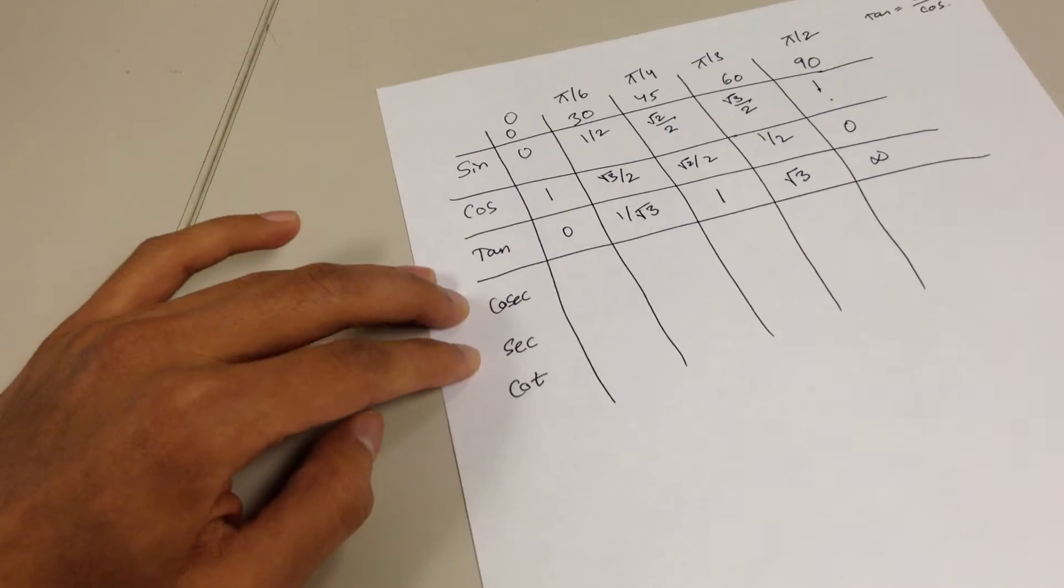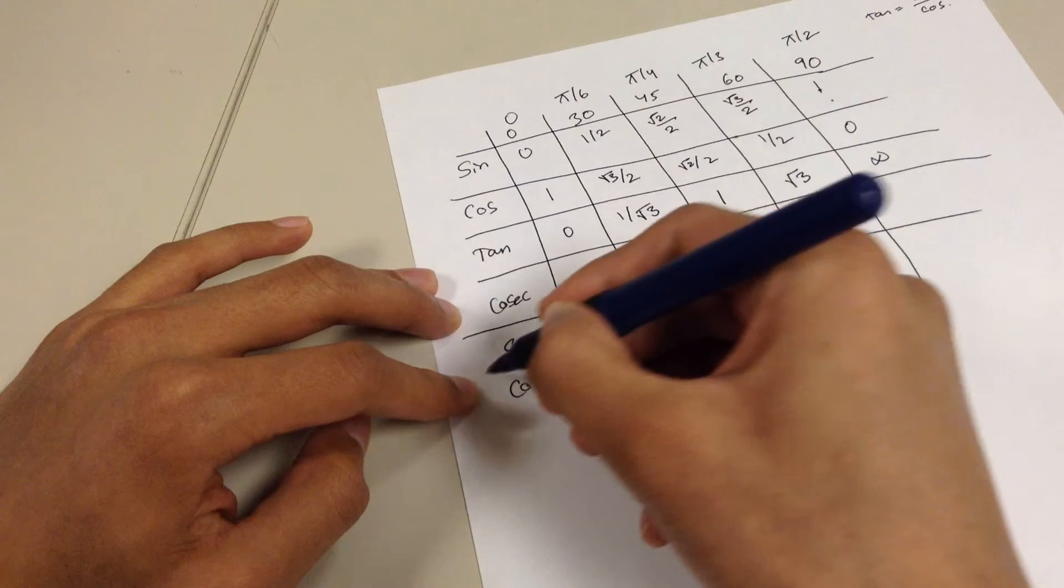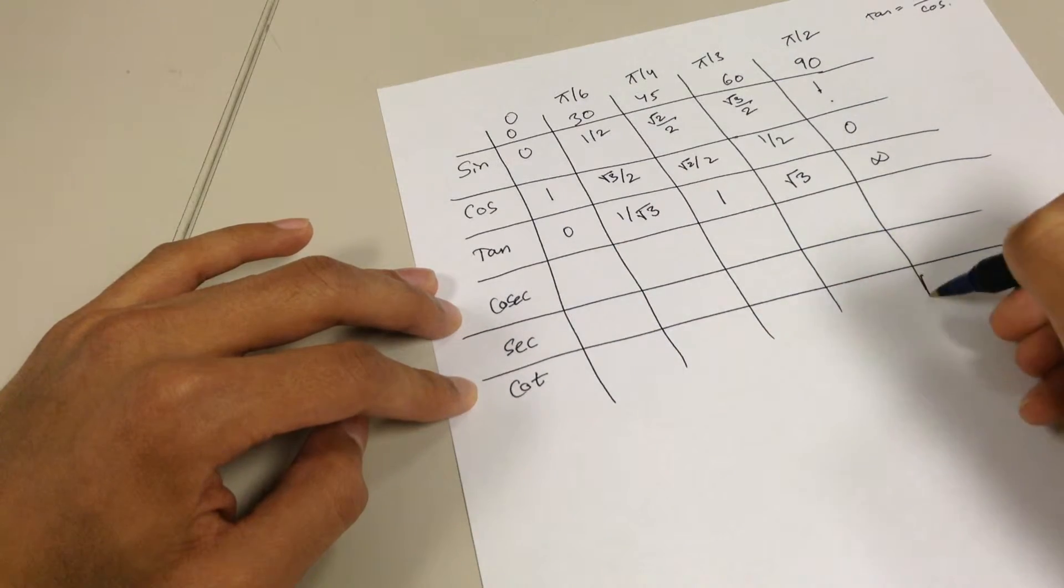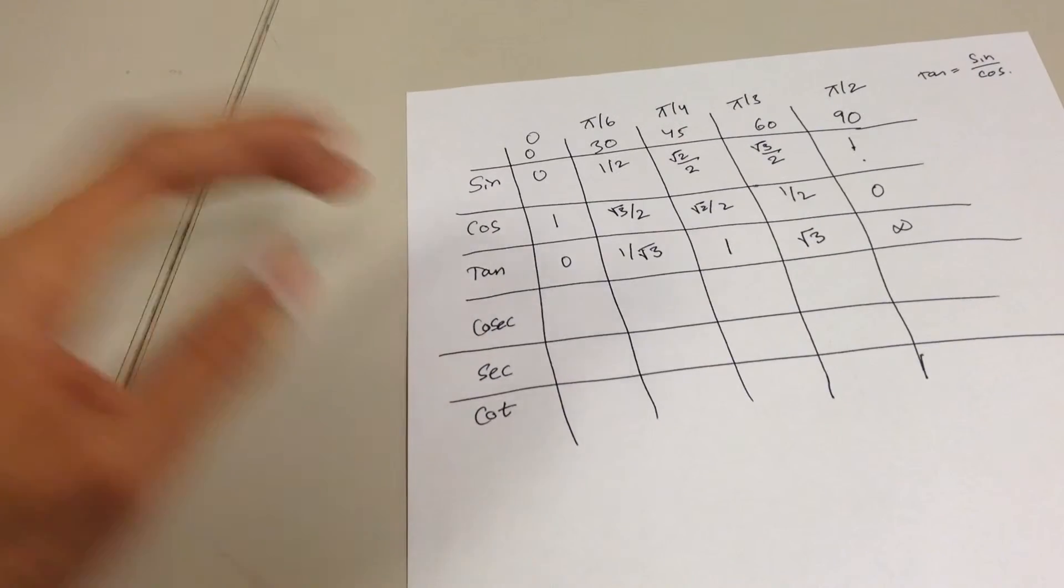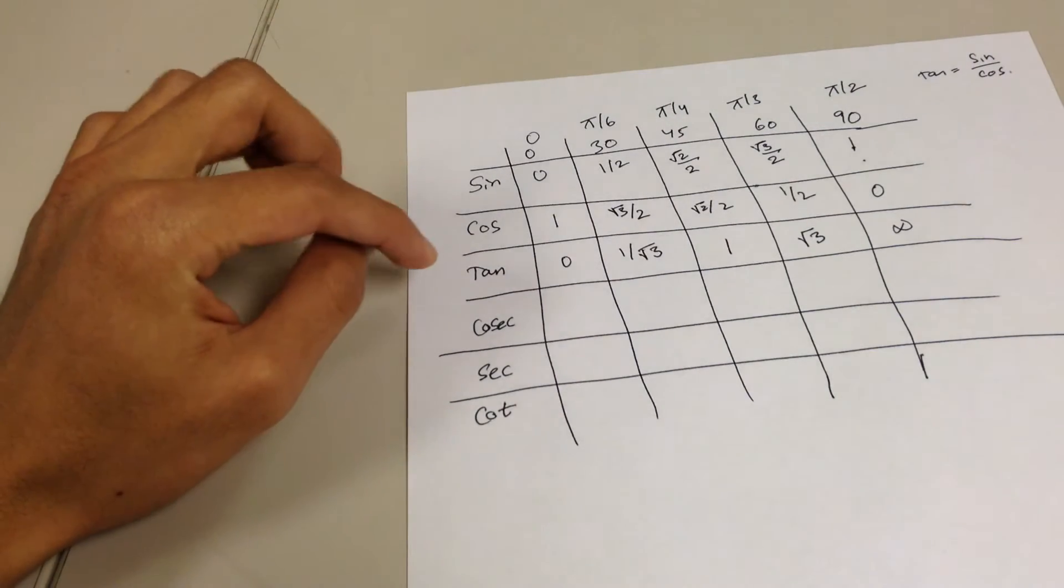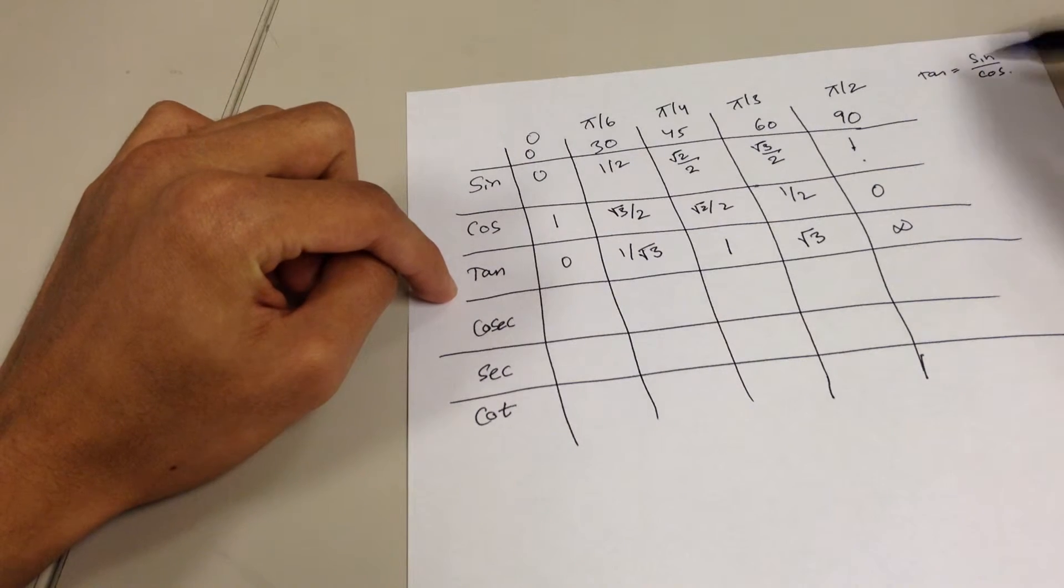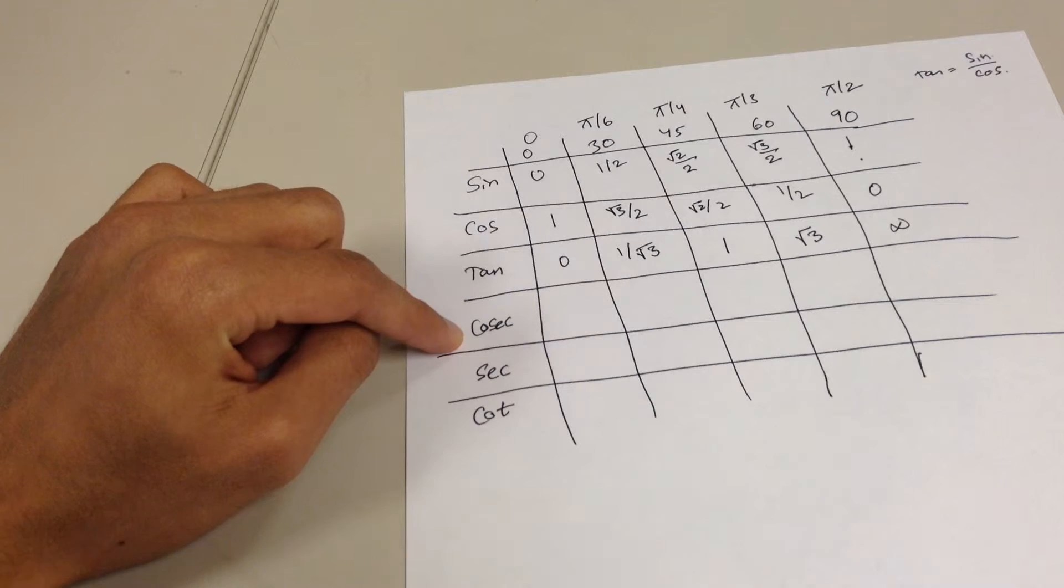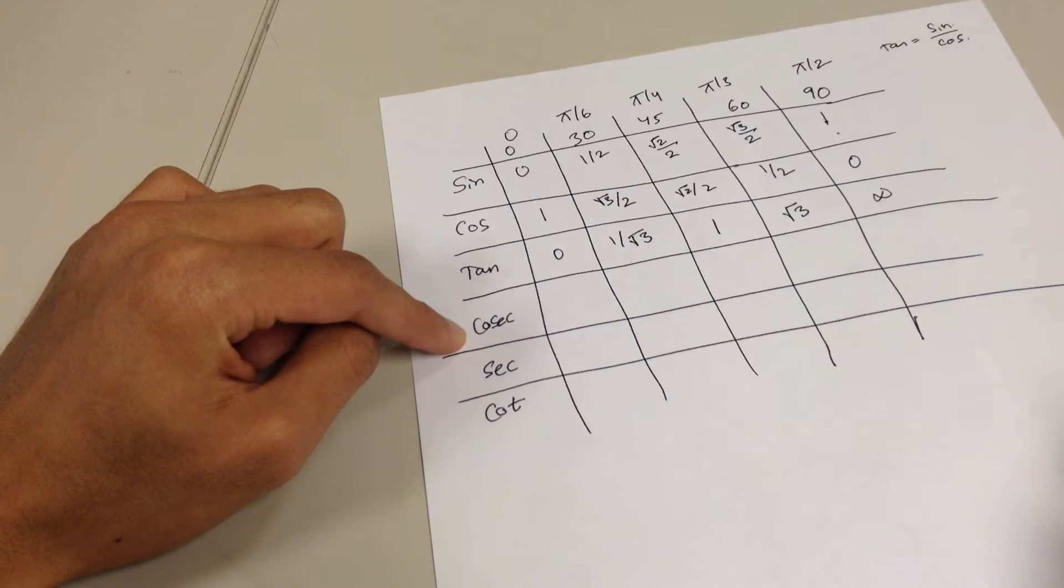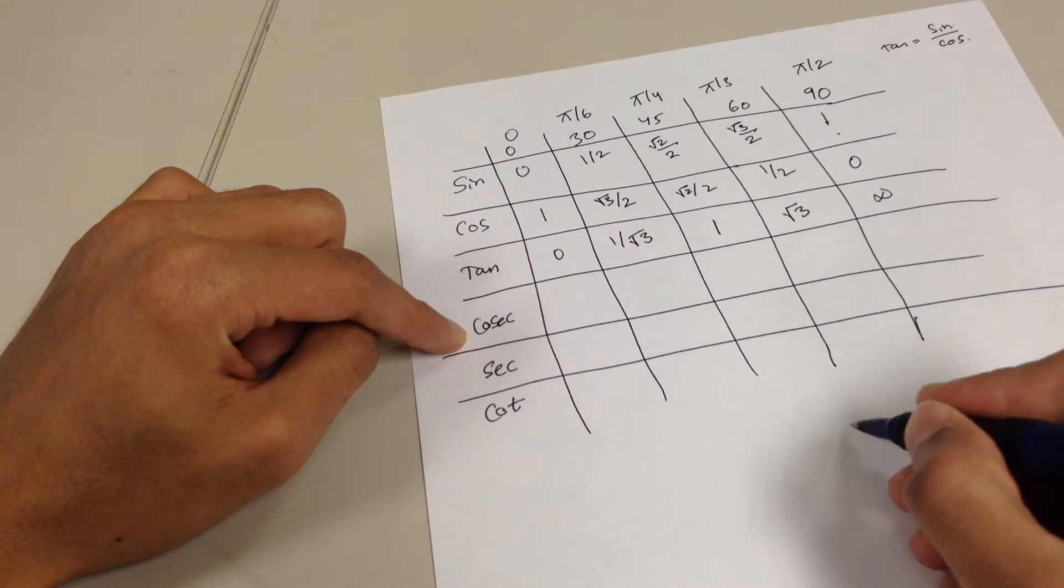Now these aren't that complicated either. Cosecant, secant, and cotangent, they aren't that complicated either. I'm not going to fill out the whole table for you guys, because I think it's good if you do it yourself. But I will tell you how to find it though. You know how we did tangent in terms of other trig functions? In the same way we can have cosecant in terms of some other trig function. Now how can we write cosecant in terms of some other trig function? Well,